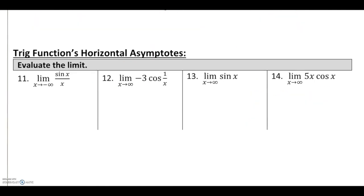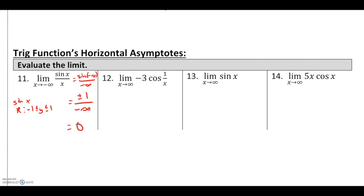Now some trig function examples. For the limit as x goes to negative infinity of sin(x)/x: sine of x always has a range between −1 and 1. So at best or worst we have ±1 divided by a very large number — something small divided by something very big equals 0. The horizontal asymptote is y = 0.